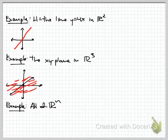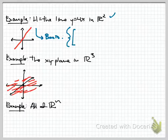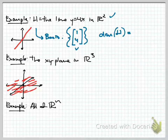Let's calculate dimensions for some familiar subspaces. First, consider the subspace H of R2 defined as the line Y equals 4X. This is a subspace—a line through the origin with slope 4. To find dim(H), we need a basis. One basis is the set containing the single vector (1, 4). That set is linearly independent by definition and spans the entire line, since every point on the line is a scalar multiple of this vector. So the dimension of H is one.